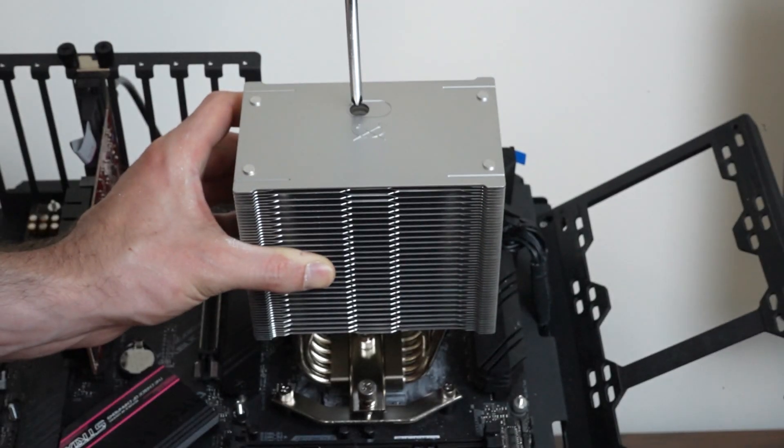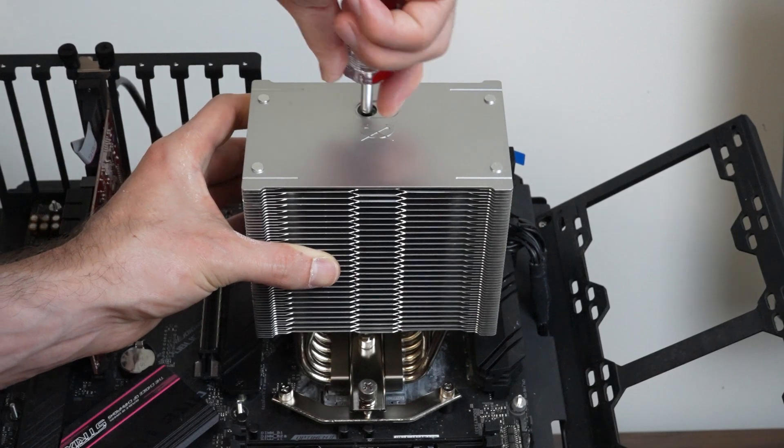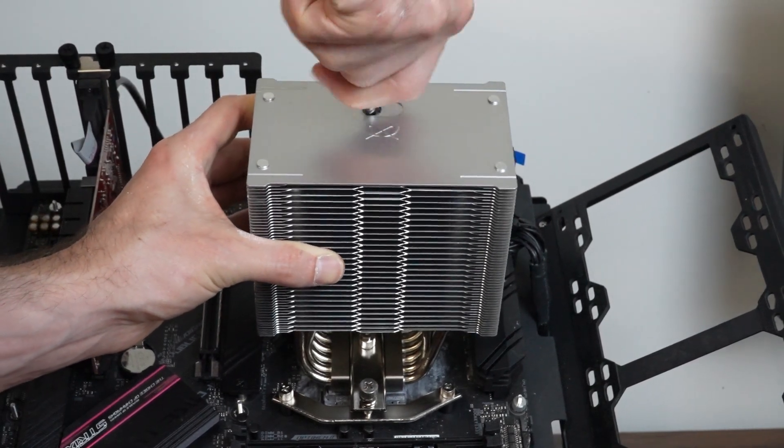In regards to installation features, this cooler features the industry standard installation process. One thing to note is that one screw is under the heatsink, which requires you to use the screwdriver that comes with this cooler. But this is to be expected with larger monolithic heatsinks such as the Mugen 6.